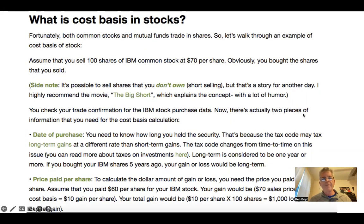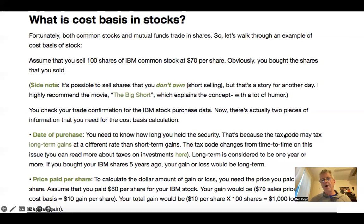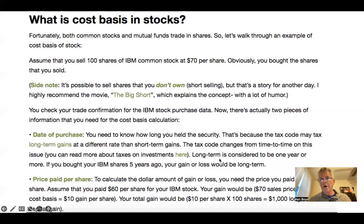There are two pieces of information you need for cost basis calculation. The first is the date of the purchase — how long you've held the security. That's because the tax code may tax long-term gains at a different rate than short-term gains, and the tax code changes from time to time. Long-term gains are considered to be more than one year.